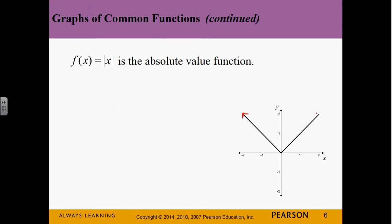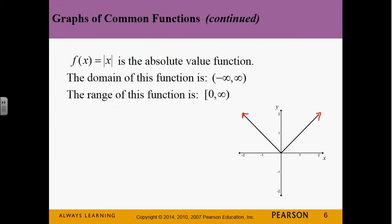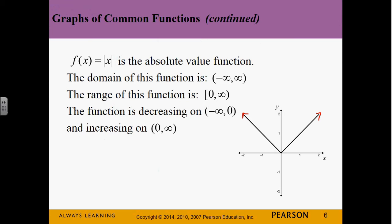Now the absolute value function. The absolute value can't be negative, so when it hits zero instead of going into the negative range, it bounces back up — that's why we get this little V. The domain is negative infinity to positive infinity. The range is zero to infinity (bracket at zero). It's decreasing from negative infinity to zero, then increasing from zero to infinity. Absolute value is an even function.